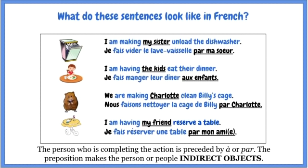Here's how these sentences look in French. Je fais vider le lave-vaisselle par ma sœur — quite literally, I am having the dishwasher unloaded by my sister. Je fais manger leur dîner aux enfants — that aux enfants looks very strange, but je fais manger aux enfants means I'm having them eat. Nous faisons nettoyer la cage de Billy par Charlotte. Je fais réserver une table par mon ami. The person who is completing the action, or the person I am having do this action, is preceded by à or par. The preposition makes the person or people indirect objects.